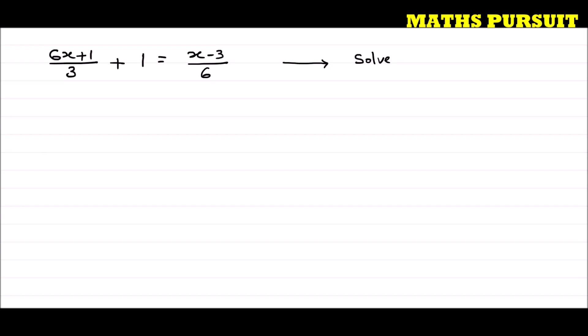Let us focus on this 6 in the denominator and try to remove it. Our first objective is to remove this 6 from the denominator. In order to do that, I need to multiply both sides of the equation by 6.